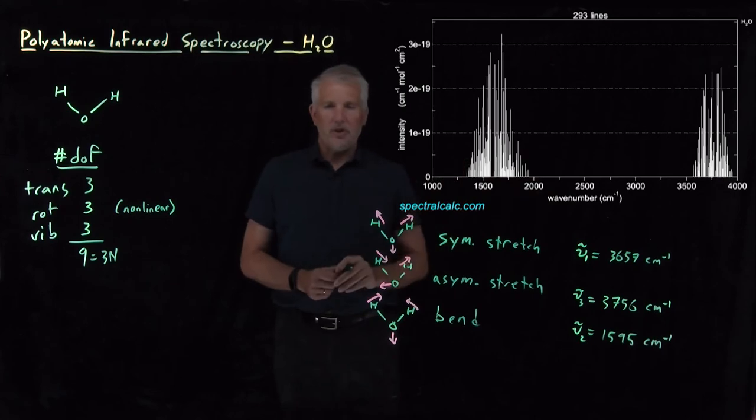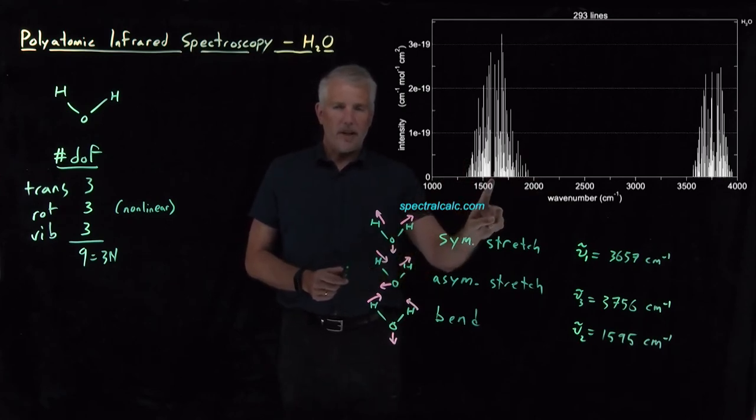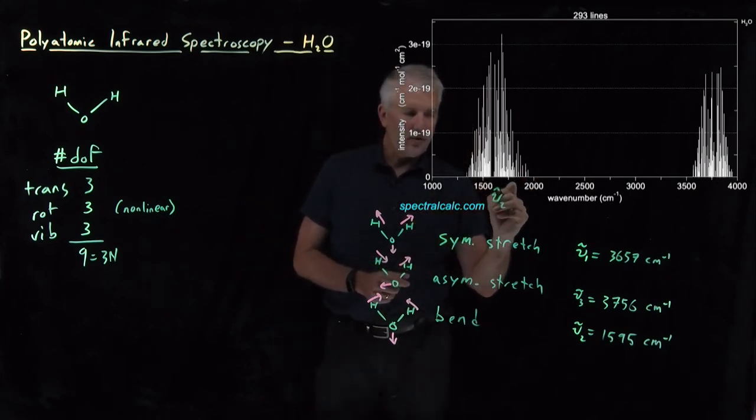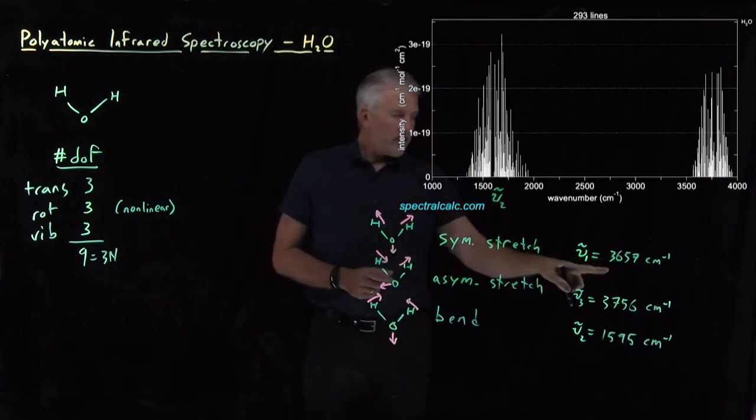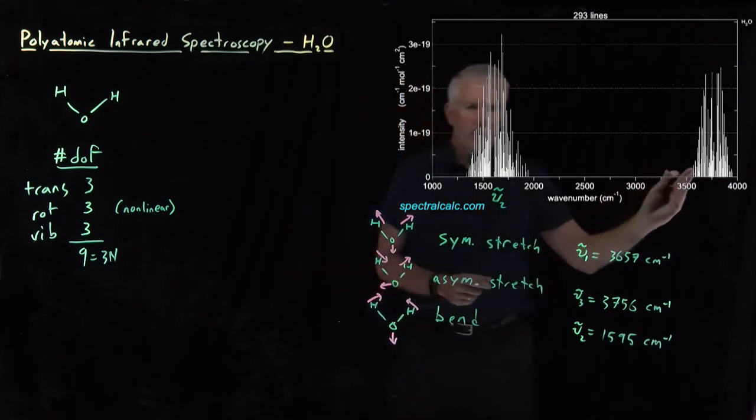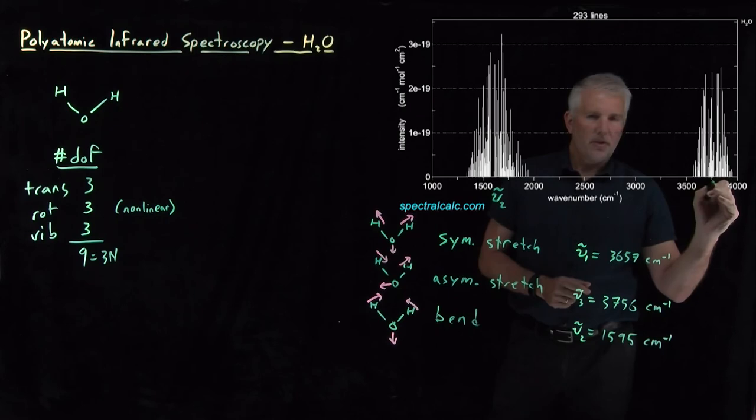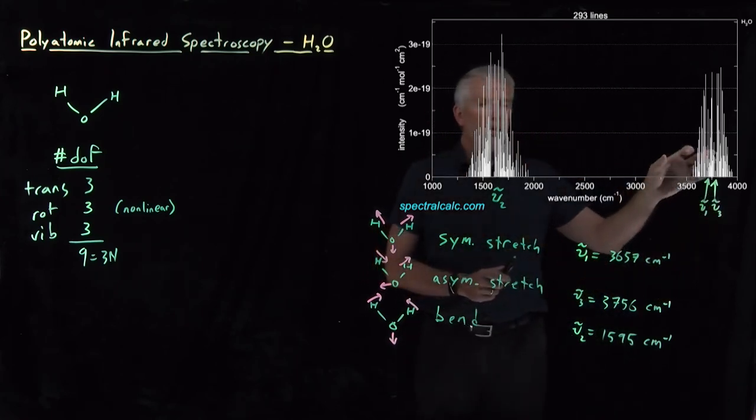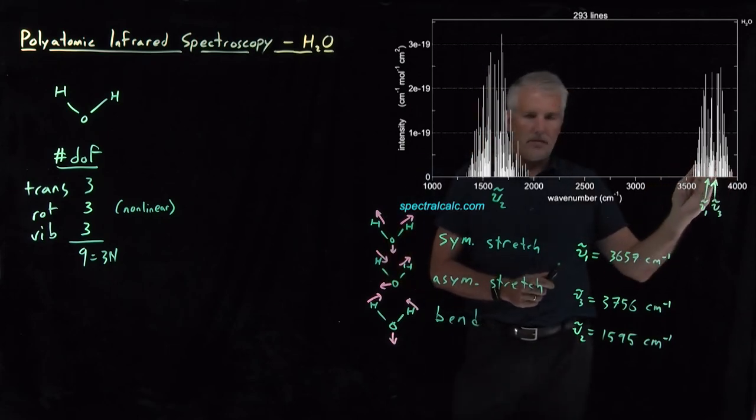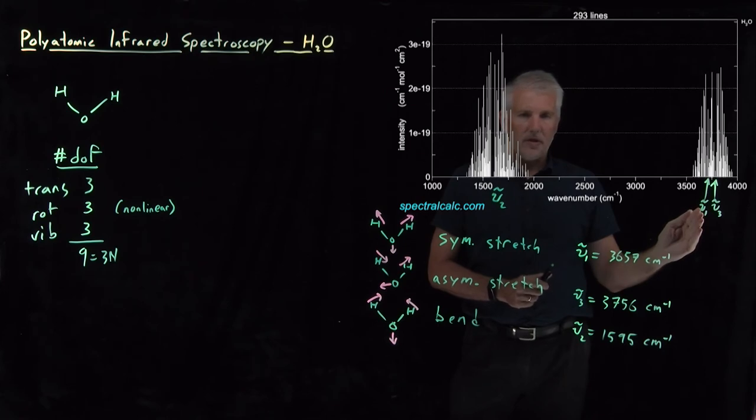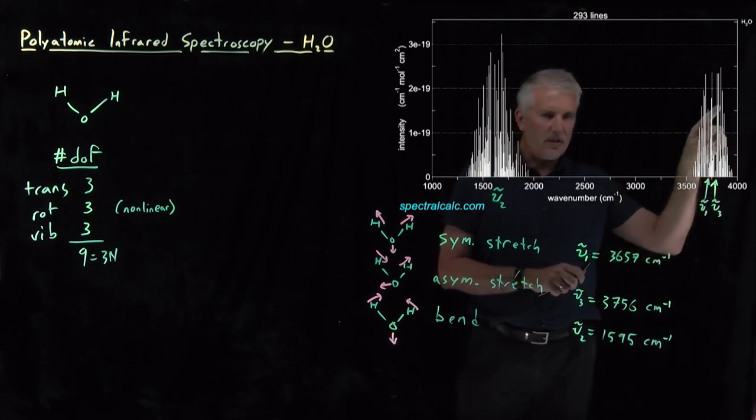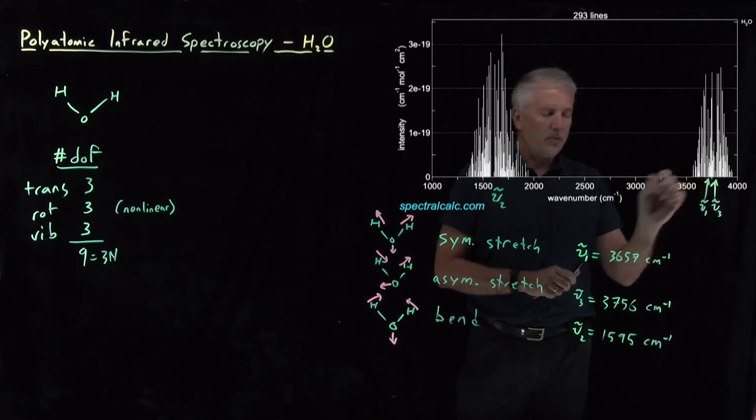If we use that information to try to interpret this spectrum, what we see is that 1595 is roughly here. This band comes from the bending motion, which we've called nu two. 3650 and 3750 are close enough to each other that they're both buried inside this band over here. So both nu three and nu one are centered at roughly the same place. So I have one band of rovibrational peaks centered roughly here, one band shifted slightly a little bit. So those two bands overlapping each other make this portion of the spectrum a little less obviously this double-peaked rovibrational band shape that we got used to for diatomic molecules.